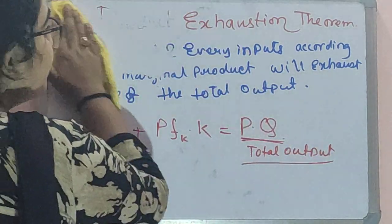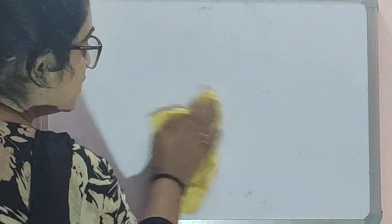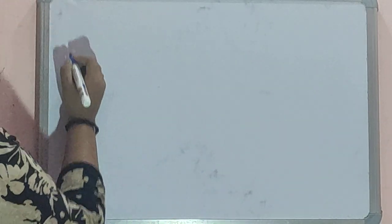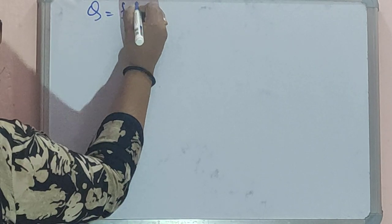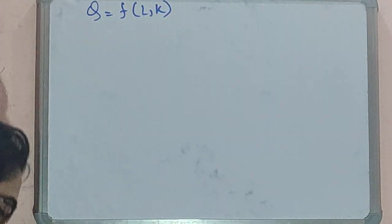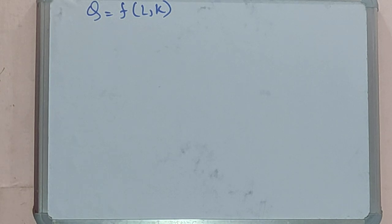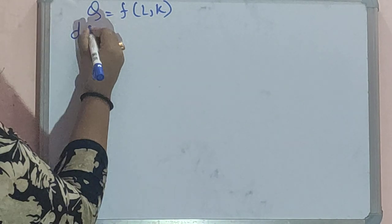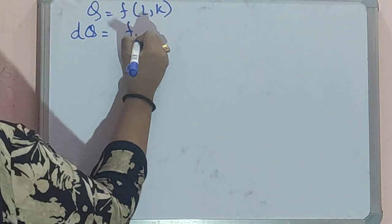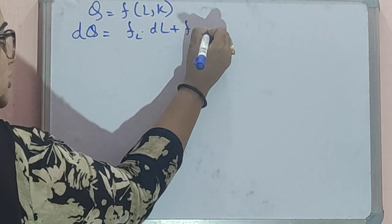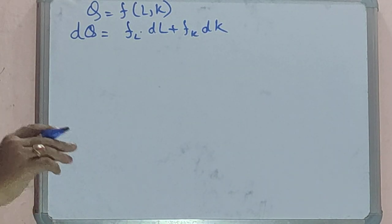Please follow the proof very carefully because it is very important for the product exhaustion theorem. First, how do you write the production function? It is Q = f(L, K). No specific form of function is assumed except that continuous partial derivatives at least up to the second order are permitted, and for each firm under competition there exists a unique profit-maximizing output. Now we shall take the total differentiation: dQ = FL·dL + FK·dK.